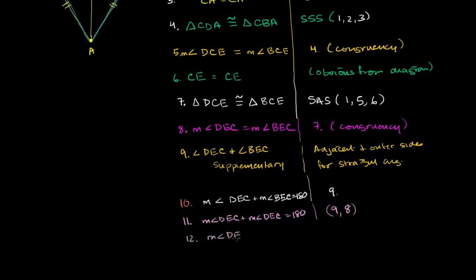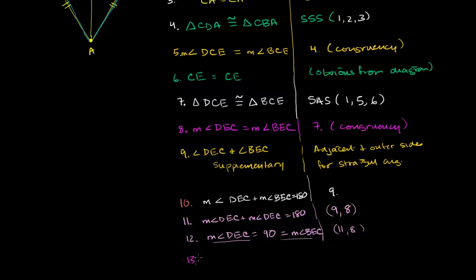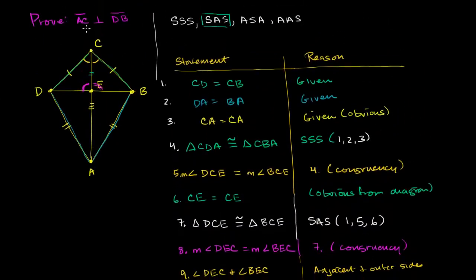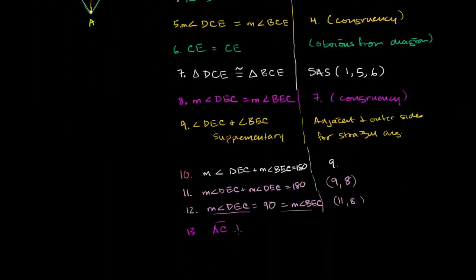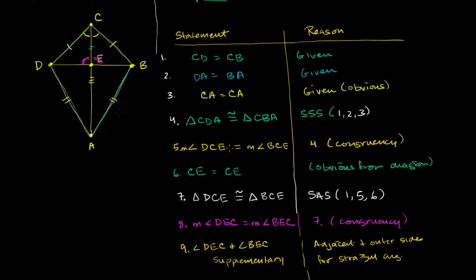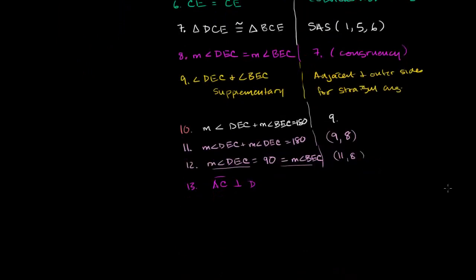Statement 12: measure of angle DEC equals 90 degrees, which also equals the measure of angle BEC — from statements 11 and 8. Since these angles are 90 degrees, statement 13: AC is perpendicular to DB. This comes straight out of statement 12.